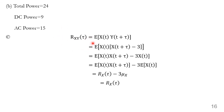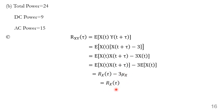The cross-correlation R_xy(τ) = E[x(t)·y(t+τ)] = E[x(t)·(x(t+τ)−3)] = E[x(t)·x(t+τ)] − 3·E[x(t)] = R_x(τ) − 3μ_x. Since μ_x = 0, R_xy(τ) = R_x(τ) = 16e^(−2|τ|).